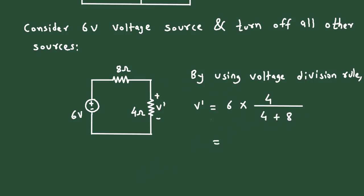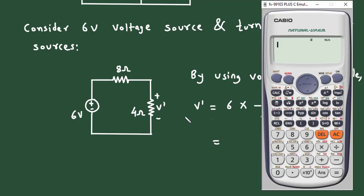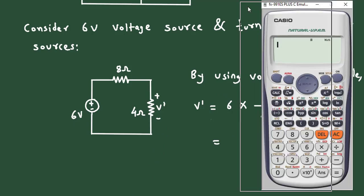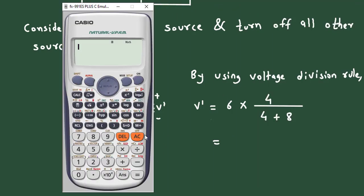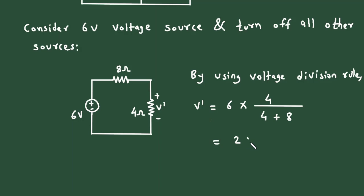Solving this: 6 multiplied by 4, divided by (4 plus 8), gives us 2 volts. This is the value of V prime.